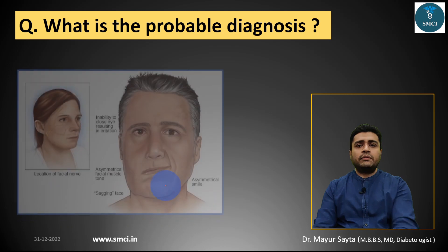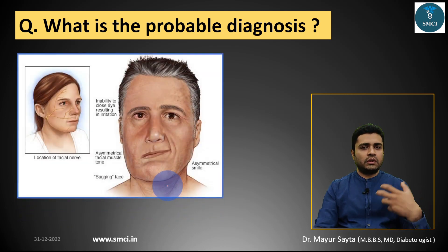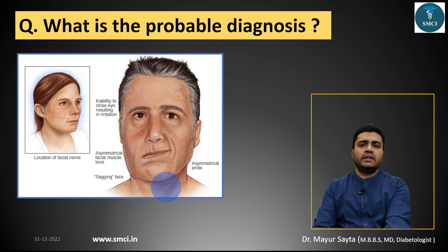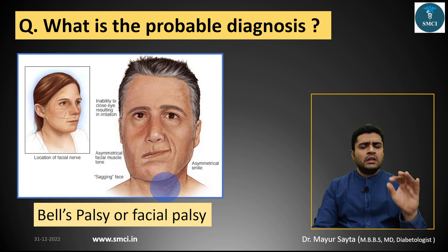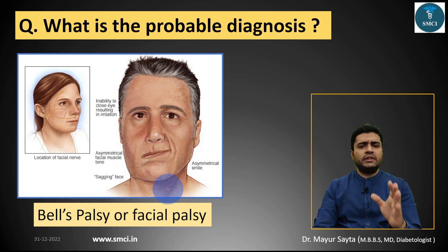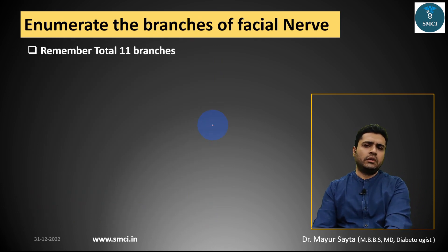If they ask the probable diagnosis in this case, you can write facial palsy or Bell's palsy. The crystal clear difference between these two we will see later in this video. The second question: enumerate the branches of the facial nerve. You must remember the 11 branches of the facial nerve.